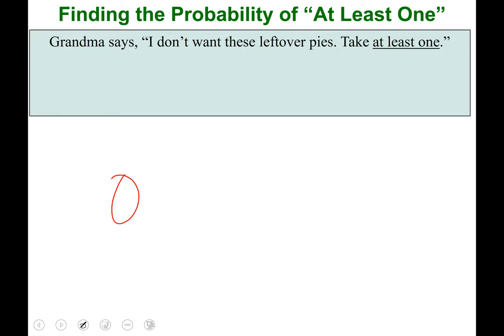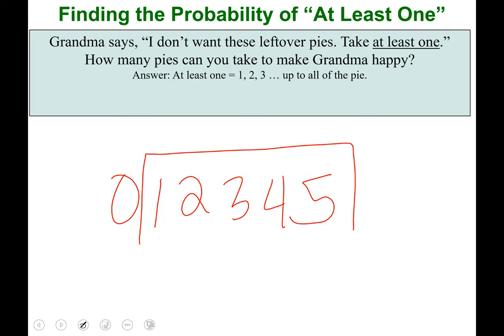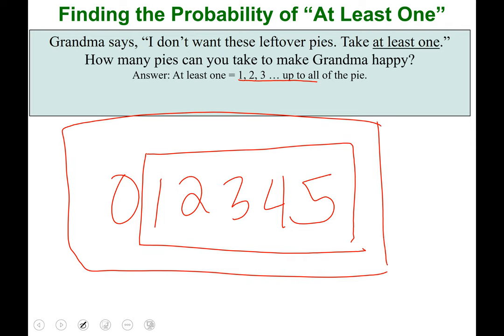Let's say grandma has four leftover pies from Thanksgiving — zero through five representing our population. Grandma says 'take at least one.' How many pies can you take to make grandma happy? If you said one, two, three, four, or five pies, you got it right. So if the entire population is zero through five, at least one means one, two, three, four, or five.